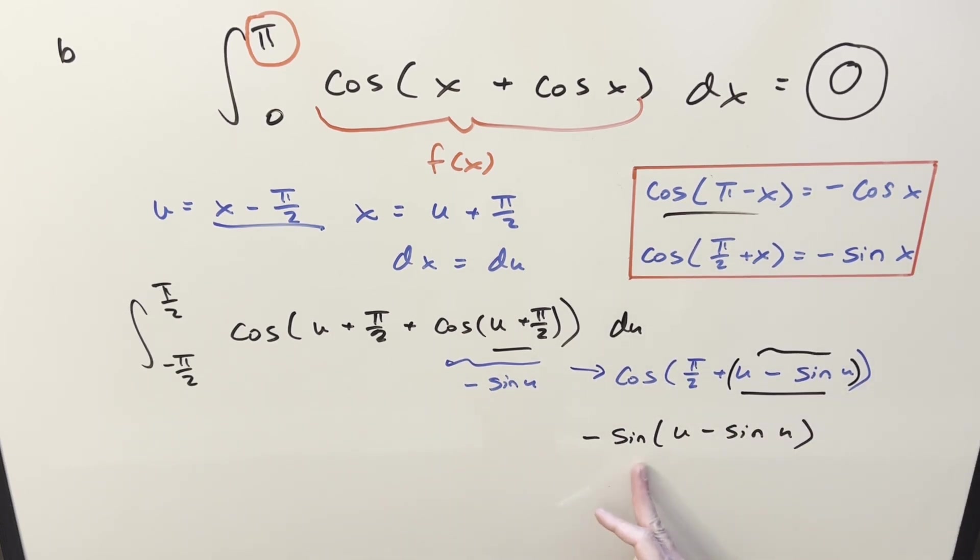But before we go back to the integral, remember that sine is an odd function. So you could like take a minus out, bring it back in. Let's just multiply it back in. So this is going to be the same thing as sine of sine u minus u. And let's take it and let's integrate this instead of this thing.